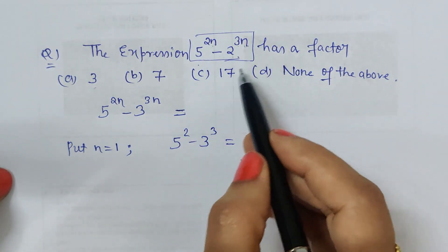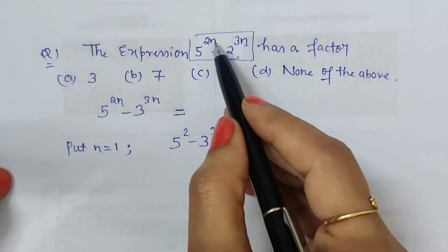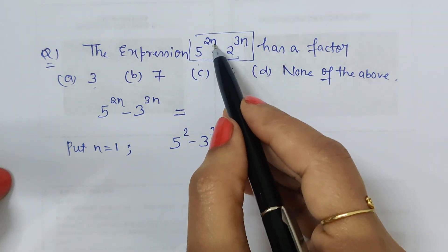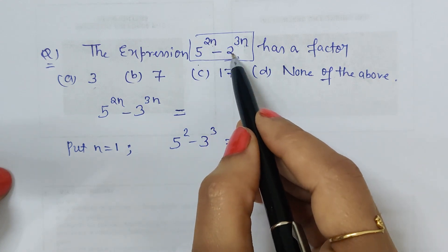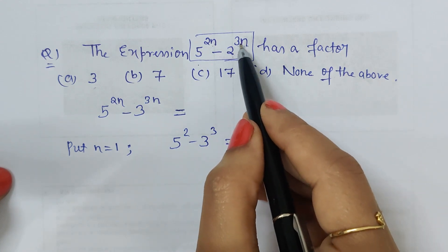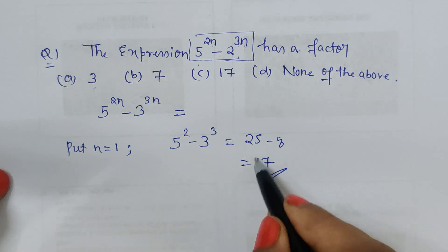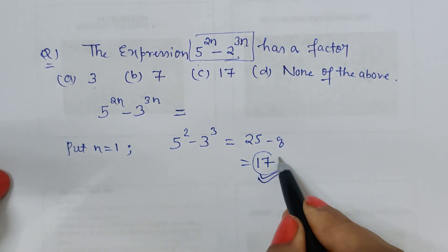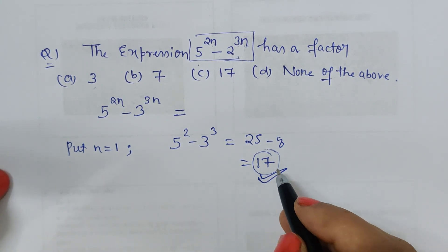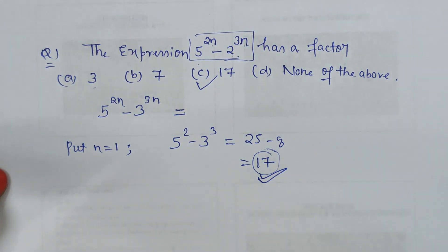Whatever next number we get will be more than this. For example, if I put n equal to 4, it will be 5 to the power 8 minus 2 to the power 12 — a bigger value — but 17 will still be its factor. So this is how we calculate, and the solution is option C.